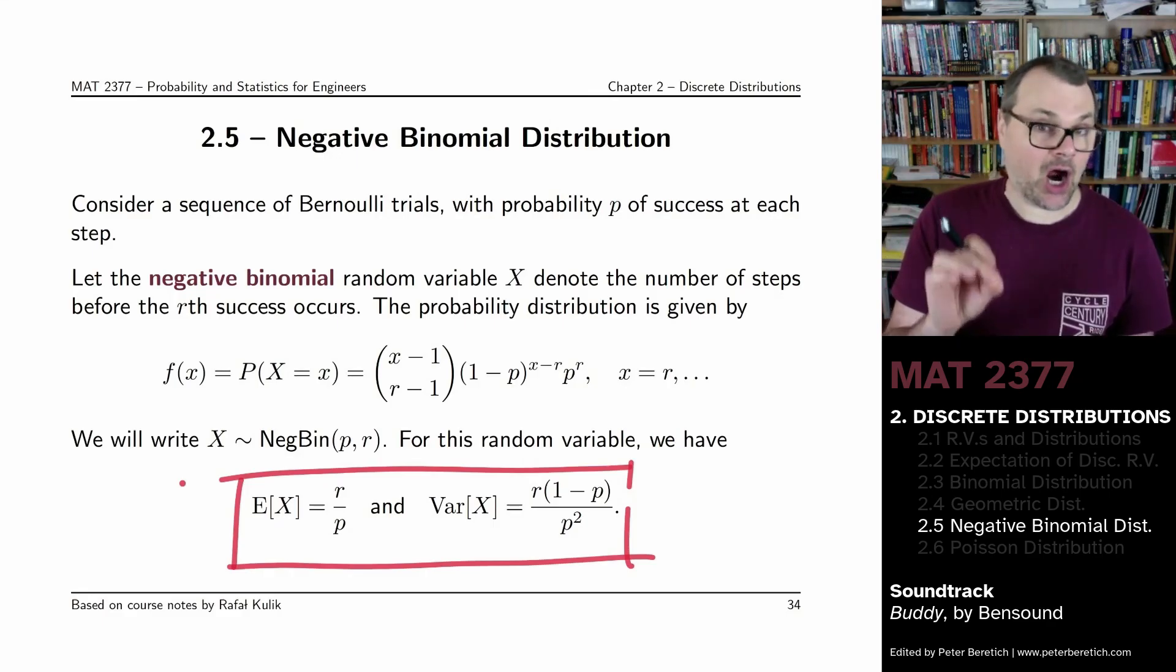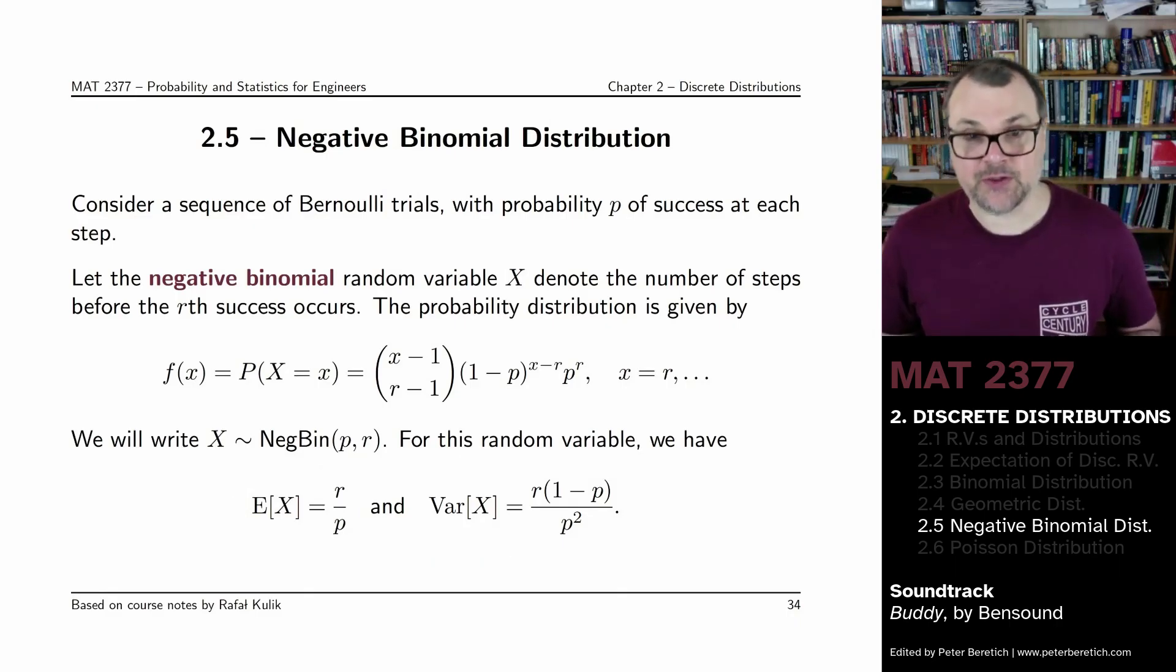Which is, again, R times the variance of the geometric distribution.